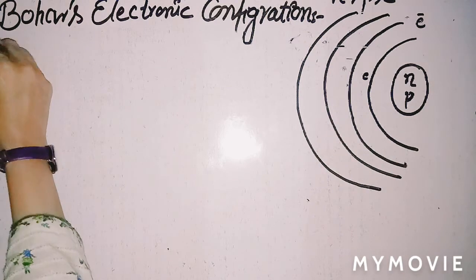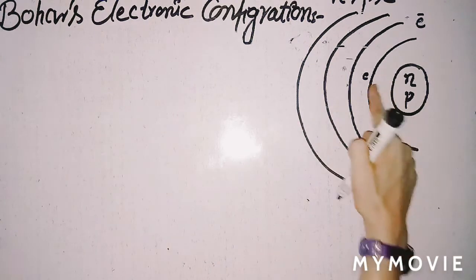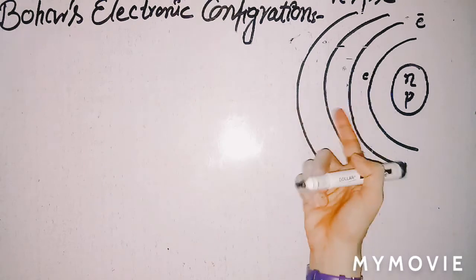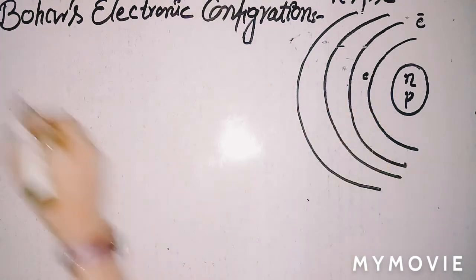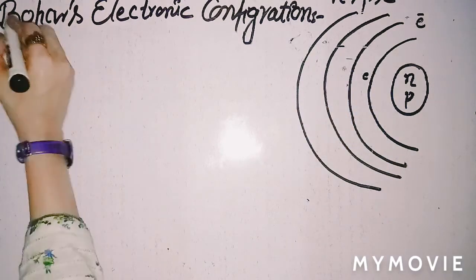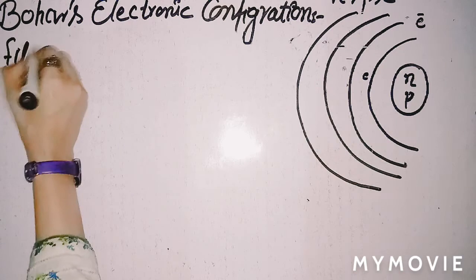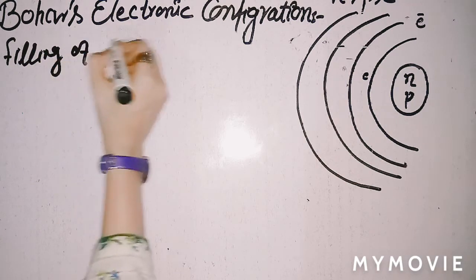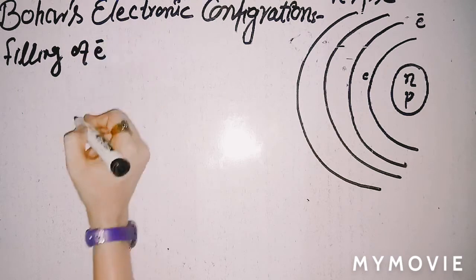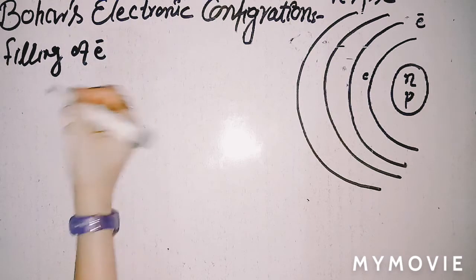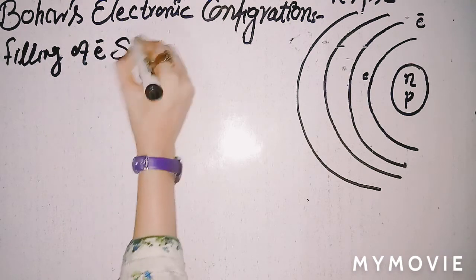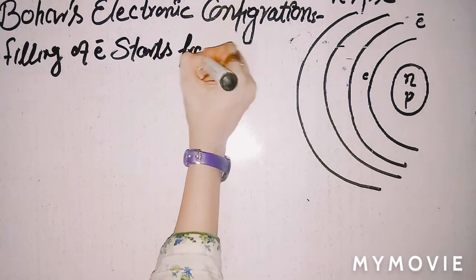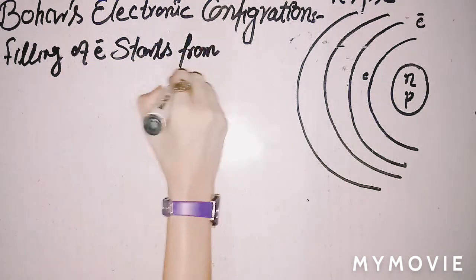The first rule tells us on what energy level the electron resides. Bohr says that the filling of electrons starts from the inner world to the outer world — meaning from the innermost shell outward.